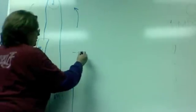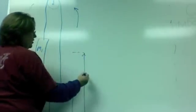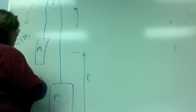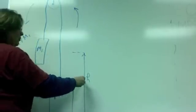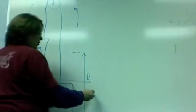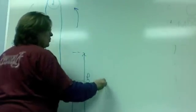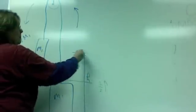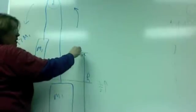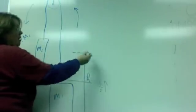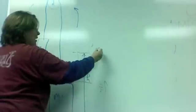If the difference in height initially is something we call h, maybe the problem says, how fast will these masses be going when they pass each other? In other words, after they've moved h over 2 down and h over 2 up, what speed will they have? That'll be one question. Another question is, when this one hits the ground, this one will be up here now, and how fast will it be going at h?